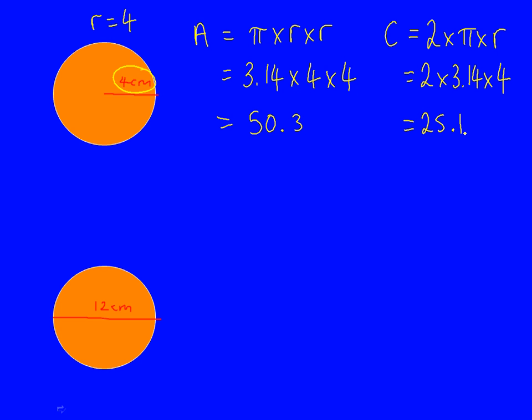Remember, with both of these answers we need the units. When it's area, it's centimetres squared, and circumference is just a distance around the edge, so circumference is just centimetres.